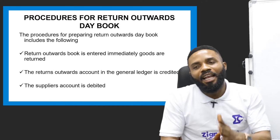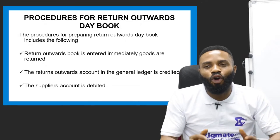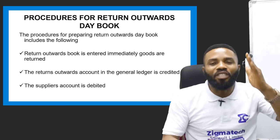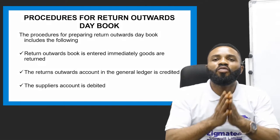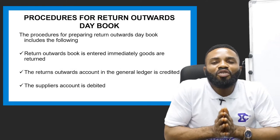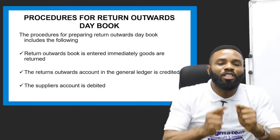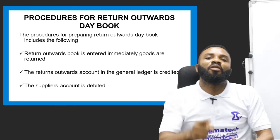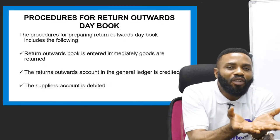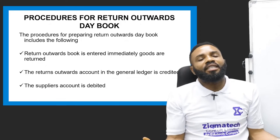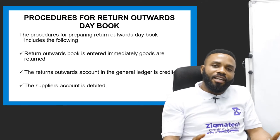The second thing to understand is that the returns outwards account in the general ledger is always credited. When we deal with debit and credit, we never forget the double entry principle — the national flag of accounting. It is centered on who receives and who gives. At every point, you debit who is receiving and credit who is giving. This principle is never compromised. Because items are going out of the company, the returns outwards account is credited, while the supplier account is debited.